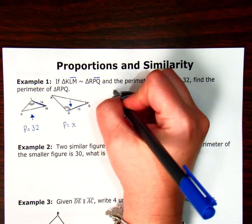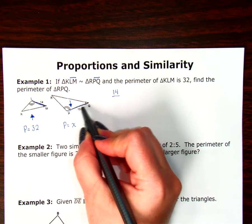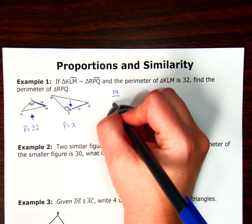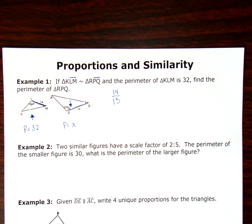I'm going to compare the 14, I'm going to put on top because that's where I put my up arrow, over the 15 I'm going to put that on the bottom because that's where I put my down arrow. My scale factor would be whatever this reduces to.